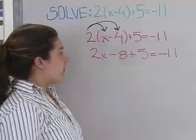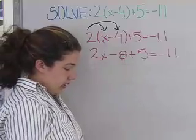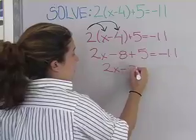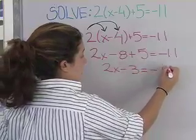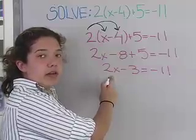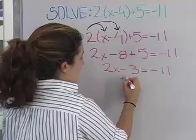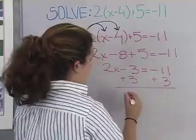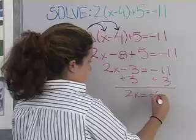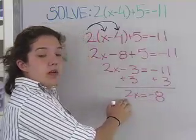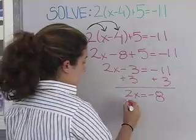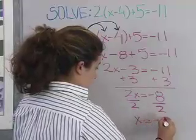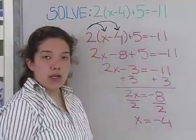Next, combine like terms. Negative 8 and positive 5 gives negative 3. We want to get 2x all by itself, so we're going to add negative 3 to both sides, then divide both sides of the equation by 2. And x equals negative 4.